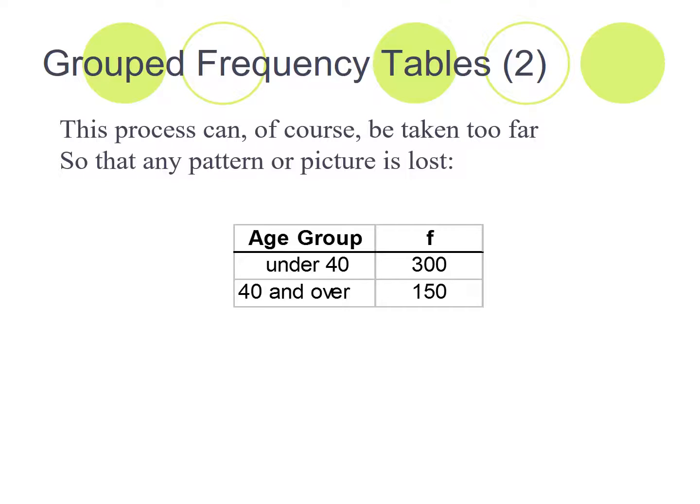Okay. So if you don't use the 8 and 15 rule, sometimes a grouped frequency table can be taken too far. So for example, if you're looking at age groups, in this case, we've only got two intervals. We don't have between 8 and 15. We've only got two. So we've got 300 people under 40 and 150 people over 40. Now we have no idea. Are these 300 people all babies or are they all 39? We don't know.